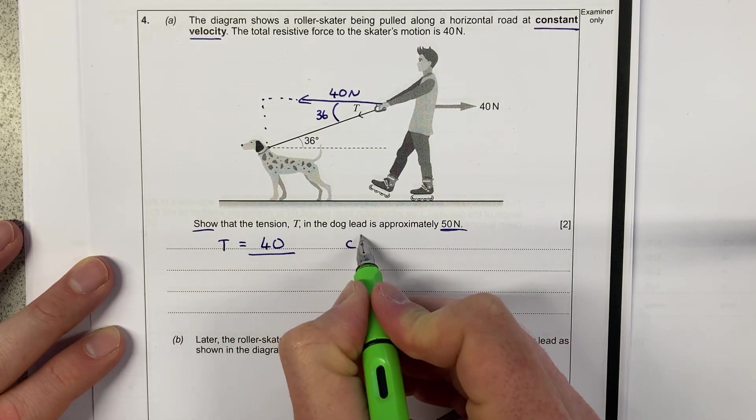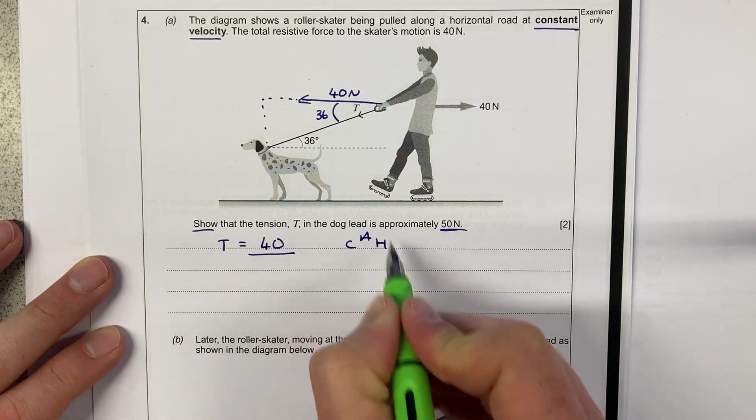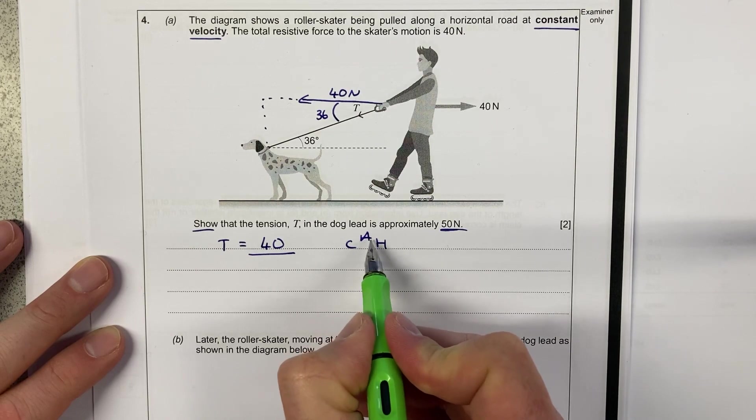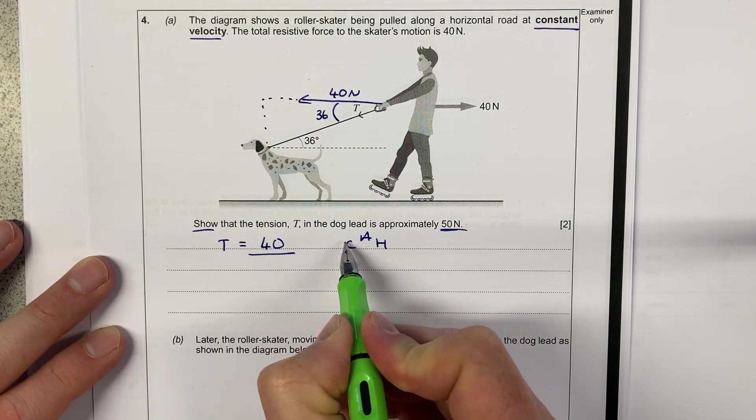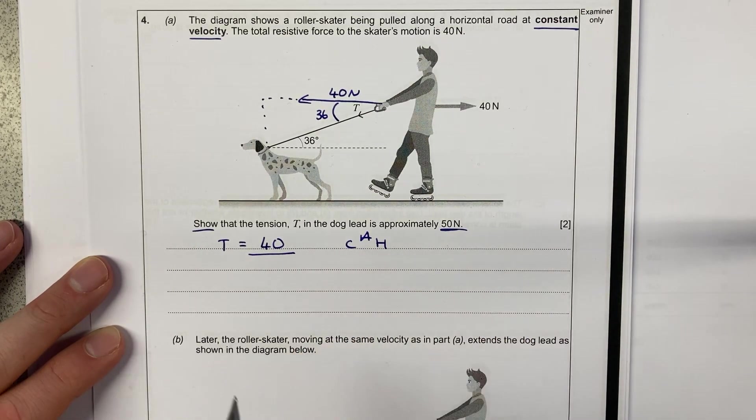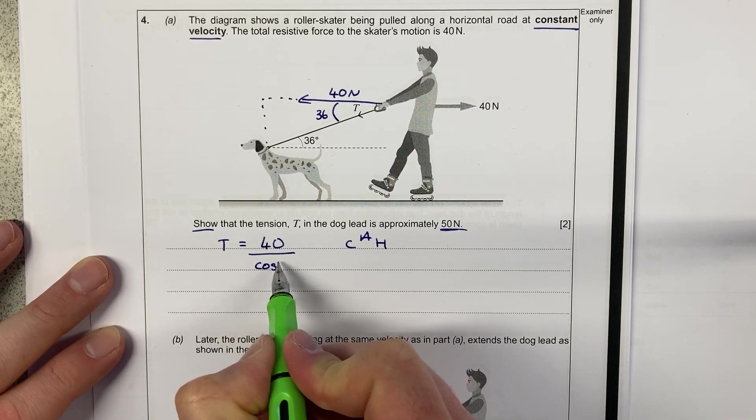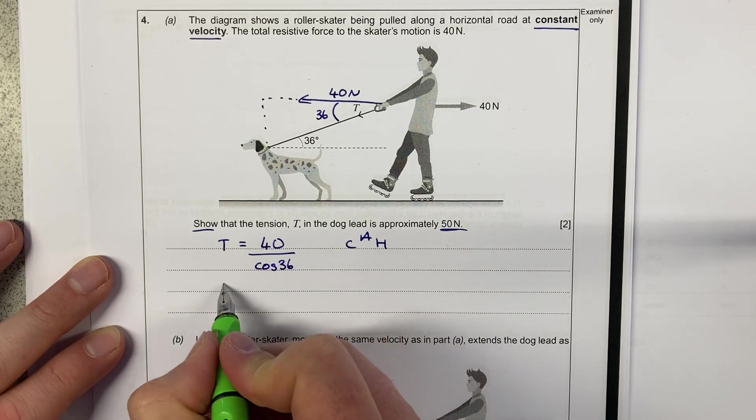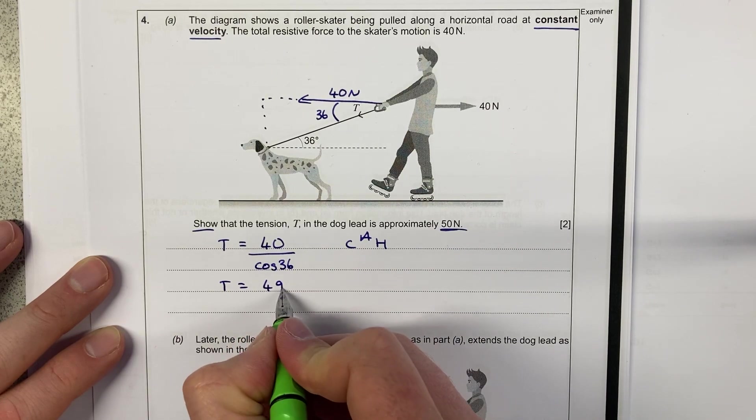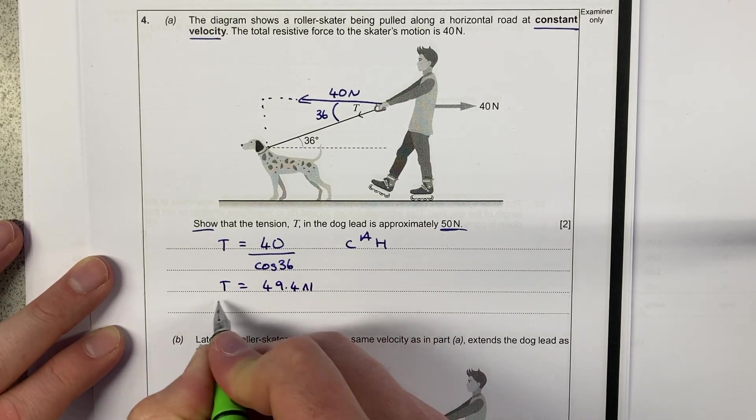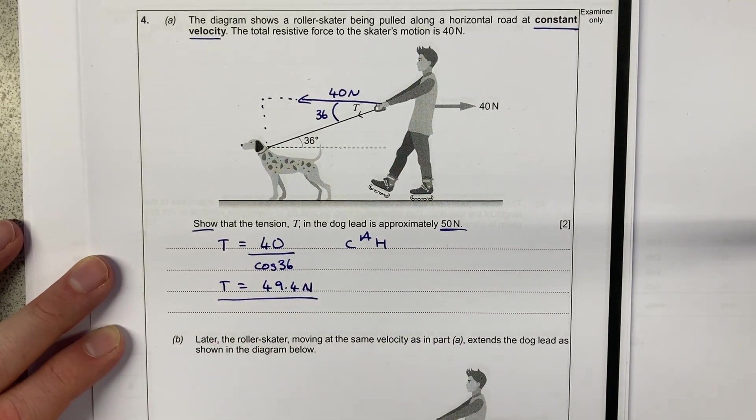So you could say that the tension force is equal to the force 40 divided by, that's my trigonometry. If my adjacent is 40, then cos of my angle there will give me the hypotenuse. So that divides over cos 36. And that gives me a tension force equal to 49.4 newtons, which I think you'll agree is close to 50.